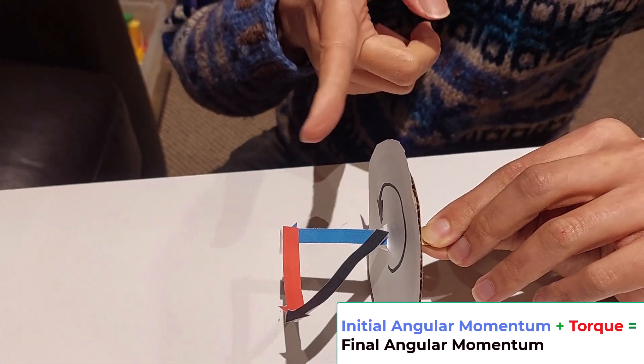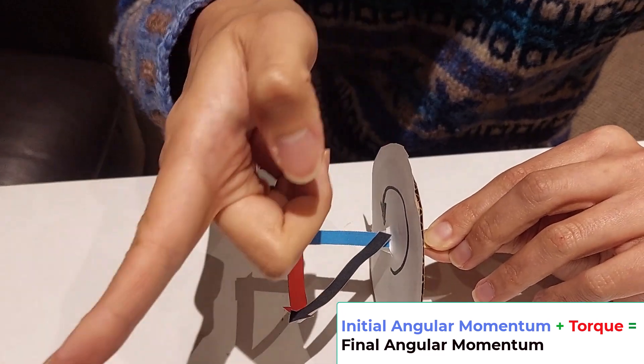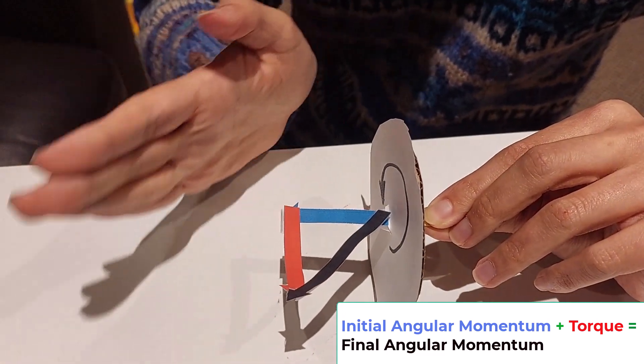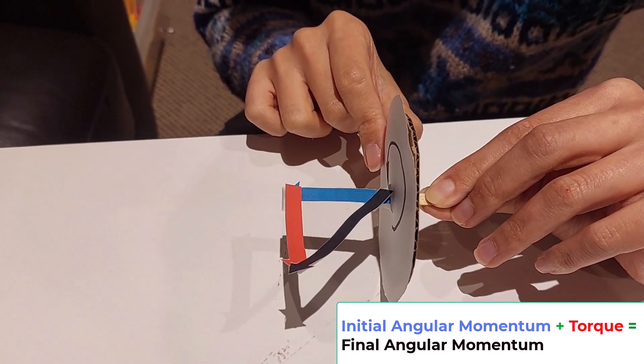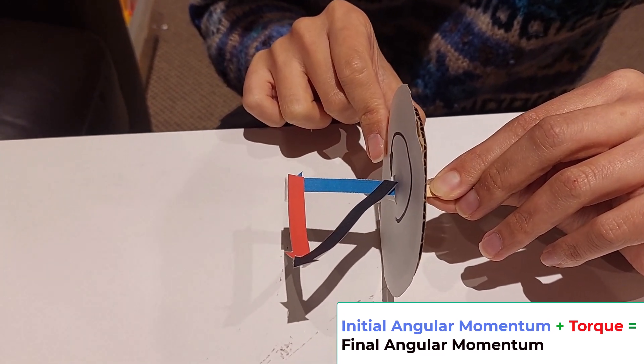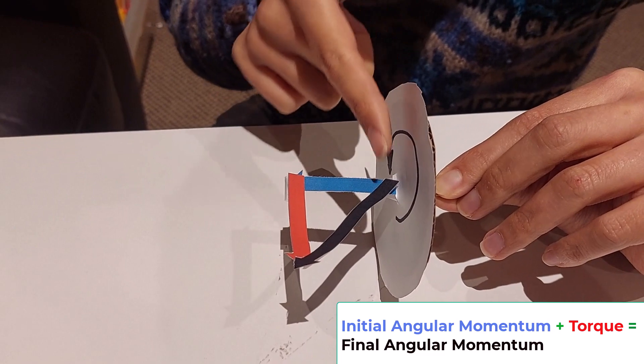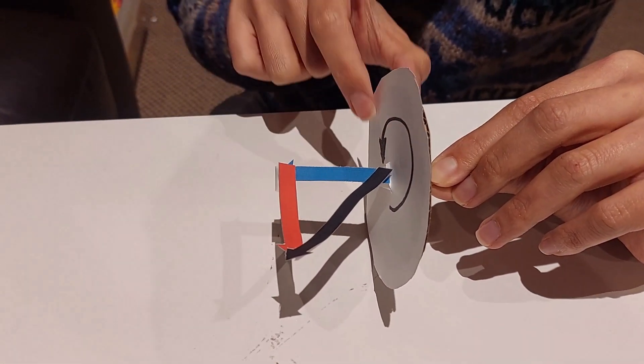Now since the black arrow points in the direction which is a little bit forward, the wheel will try to align its axis of rotation to the final direction of the total angular momentum, which means that the